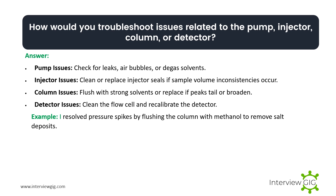How would you troubleshoot issues related to the pump, injector, column, or detector? Pump issues: check for leaks, air bubbles, or degas solvents. Injector issues: clean or replace injector seals if sample volume inconsistencies occur. Column issues: flush with strong solvents or replace if peaks tail or broaden. Detector issues: clean the flow cell and recalibrate the detector. Example: I resolve pressure spikes by flushing the column with methanol to remove salt deposits.